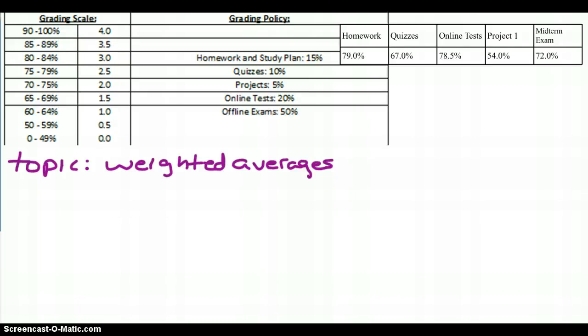So let's talk about weighted averages. I need to calculate a weighted average any time I have, for example, a grading scale that operates on percentages. My homework is worth 15%, my quizzes are worth 10%, projects 5%, online tests 20%, and offline exams 50%. I'm going to use this information to calculate a weighted average based on the scores listed over here.